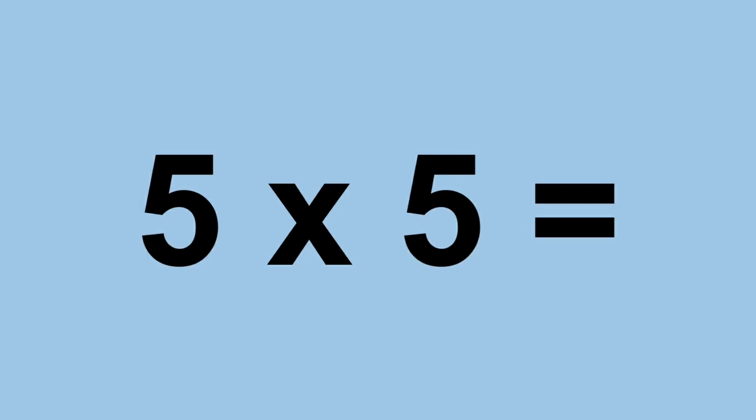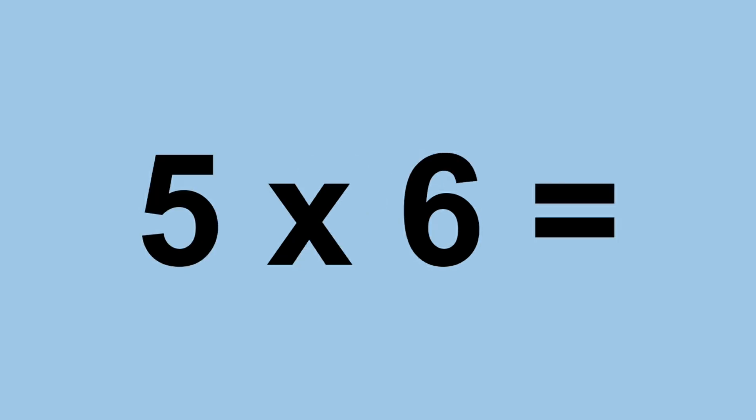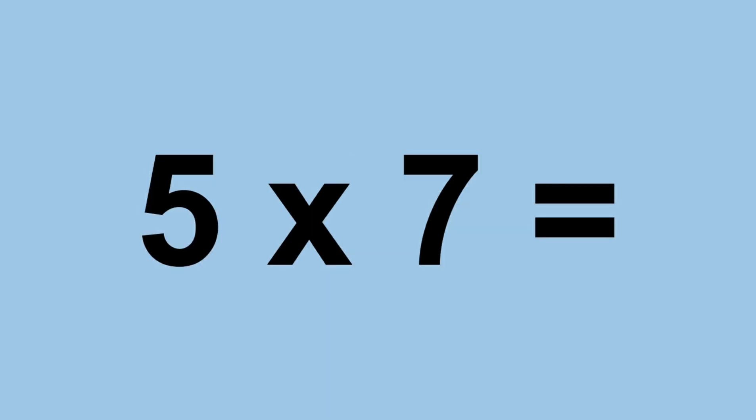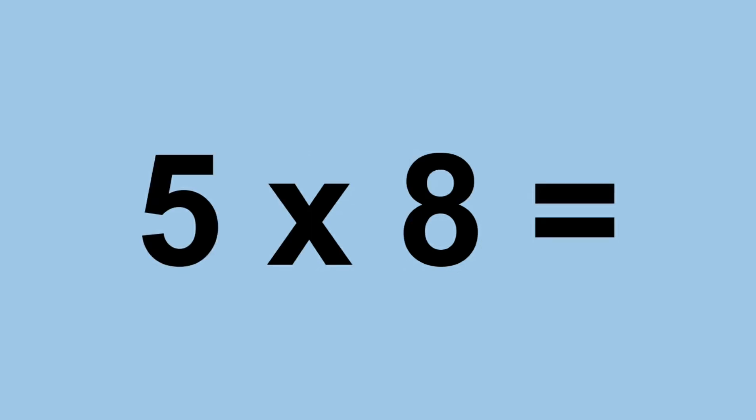Five times five equals twenty-five. Five times six equals thirty. Five times seven equals thirty-five. Five times eight equals forty.